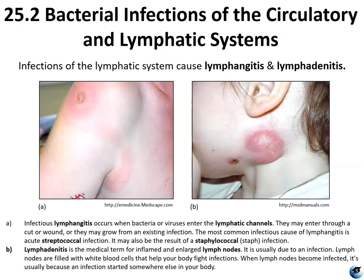Infections of the lymphatic system cause lymphangitis and lymphadenitis. Infectious lymphangitis occurs when bacteria or viruses enter the lymphatic channels — through a cut or wound, or from an existing infection. The most common infectious cause of lymphangitis is acute streptococcal infection; it may also result from staphylococcal infection. Lymphadenitis is the medical term for inflamed and enlarged lymph nodes, usually due to an infection that started somewhere else in the body and then traveled to the lymph.